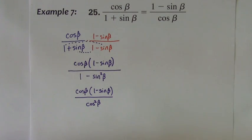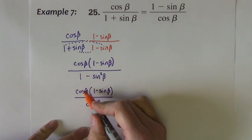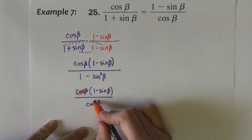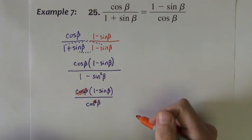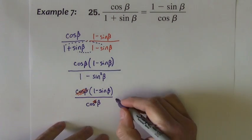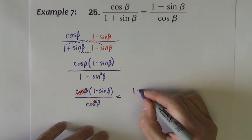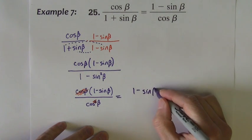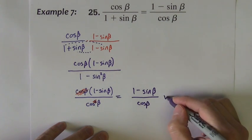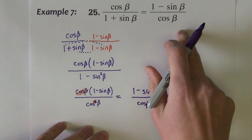One more step. We'll finish this. This is just a matter of reducing the fraction. Cosine beta divided by cosine squared, I can take one of those out on top and bottom of the fraction, leaving me with a numerator of 1 minus sine beta divided by cosine beta. And that's what we're after.